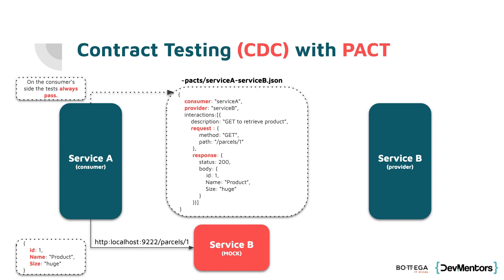Moving to step two on the provider side: the provider takes this PACT definition and uses the data inside to call itself and check whether the response it provides matches the expectations. If yes, we have a match on the contract side. If no, it means the provider broke the PACT — this public contract — and needs further fixing. On the provider side, this test will not always be green.